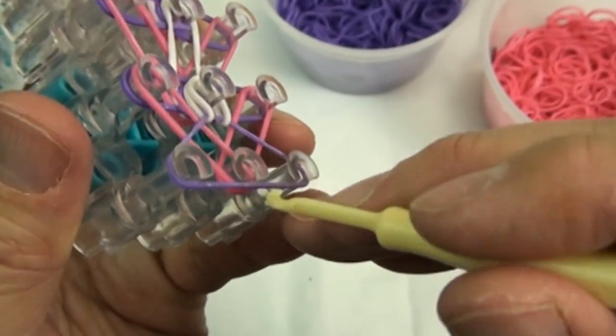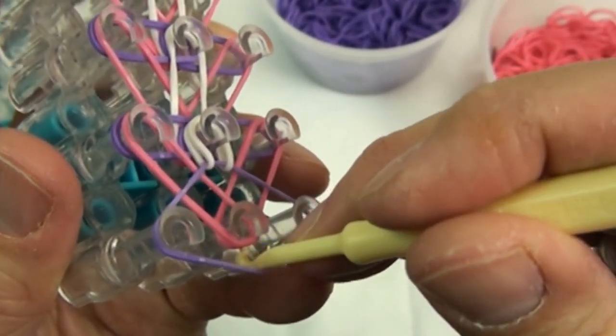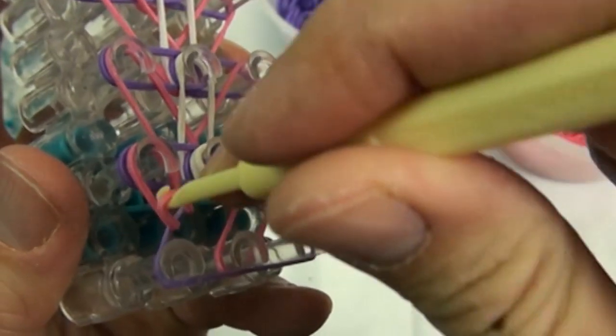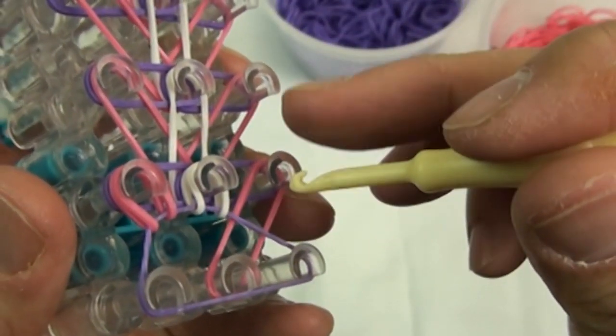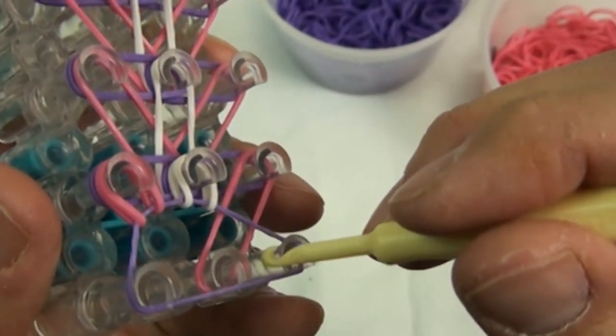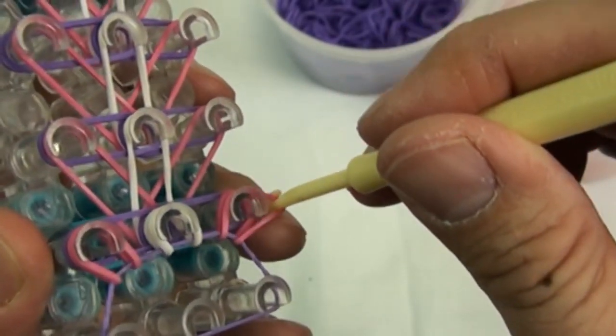Pick the pink rubber band and loop it to the left side of the pin. And finally pick the pink rubber band and loop it to the right side of the forward pin.